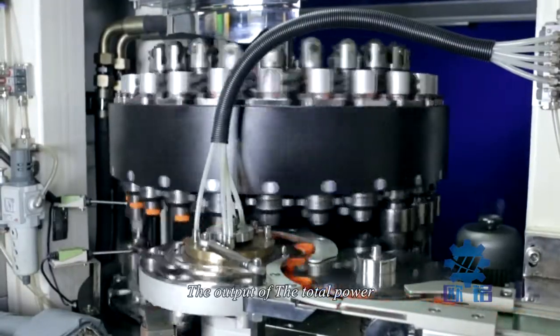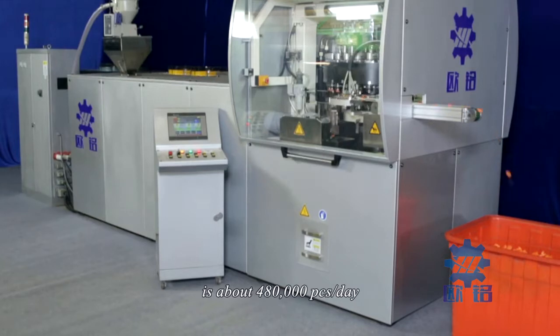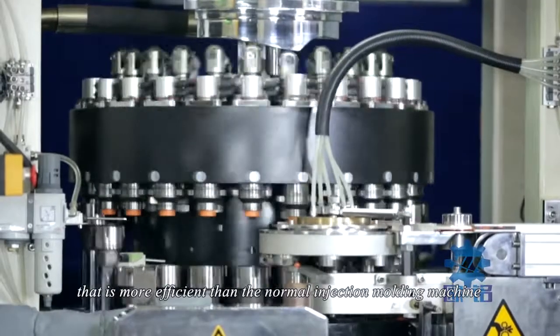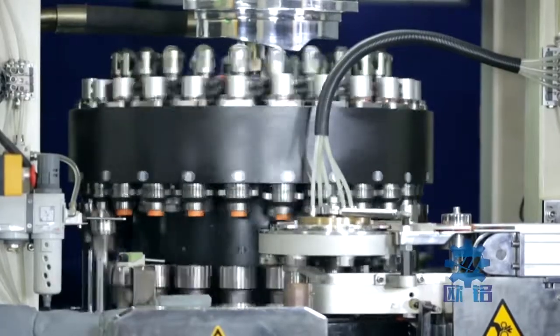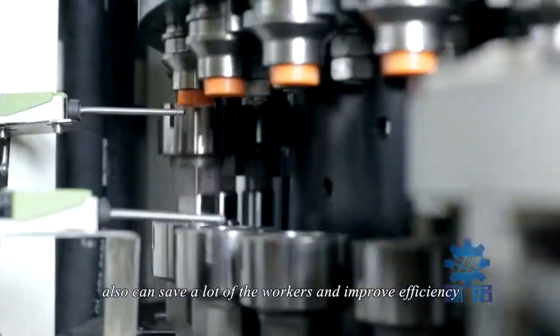The output of the Ouming compression molding machine 24-cavity is about 480,000 pieces per day. This is more efficient than a normal injection molding machine. The compression molding machine also can save a lot of workers and improve efficiency.